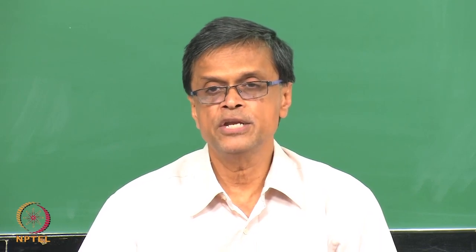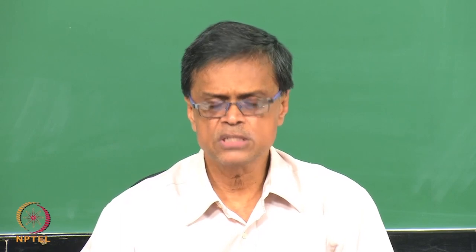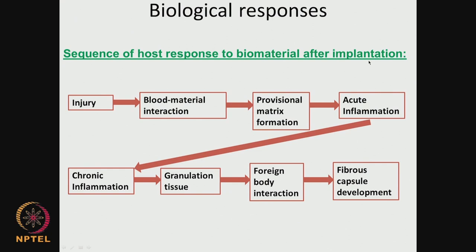I did introduce some of these topics in the previous lecture as well. There is a sequence of events that happen as soon as the biomaterial is implanted into the system. The place where it is implanted is considered as a site of injury, so there could be a blood-material interaction — for example, if it is a cardiovascular stent or a diaphragm valve. Then there is a provisional matrix formation; if there is blood-material interaction, coagulation starts happening and complement activation could occur. Then you have acute inflammation at the site, which leads to chronic inflammation, then formation of granulation tissue, and finally the material could be completely encapsulated — fibrous capsule development.